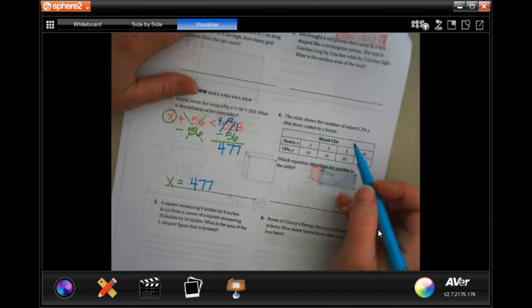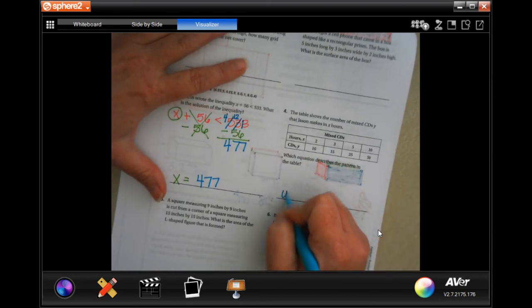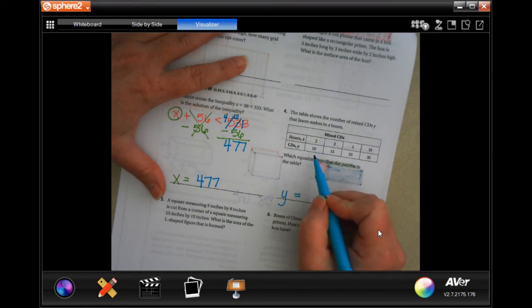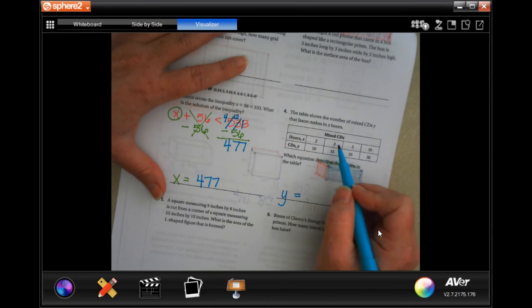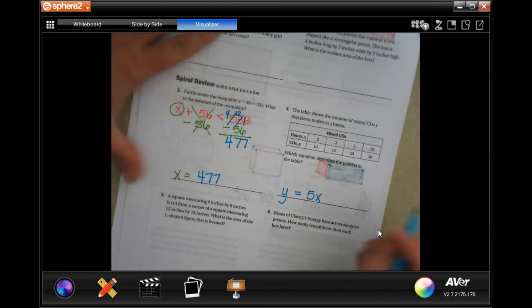The table shows the number of mix CDs, Y, that Jason can make in x hours. Which equation describes the pattern on the table? Well, in order to get from 2 to 10, we either have to add 8 or we have to multiply by 5. So, let's see. If we add 8 to 3, we get 11. So, that's not going to work. But if we multiply it by 5, we do get 15. So, it's going to be 5 times whatever x is. x times 5 is 15. x times 5 is 25. x times 5 is 50. So, there's your equation.